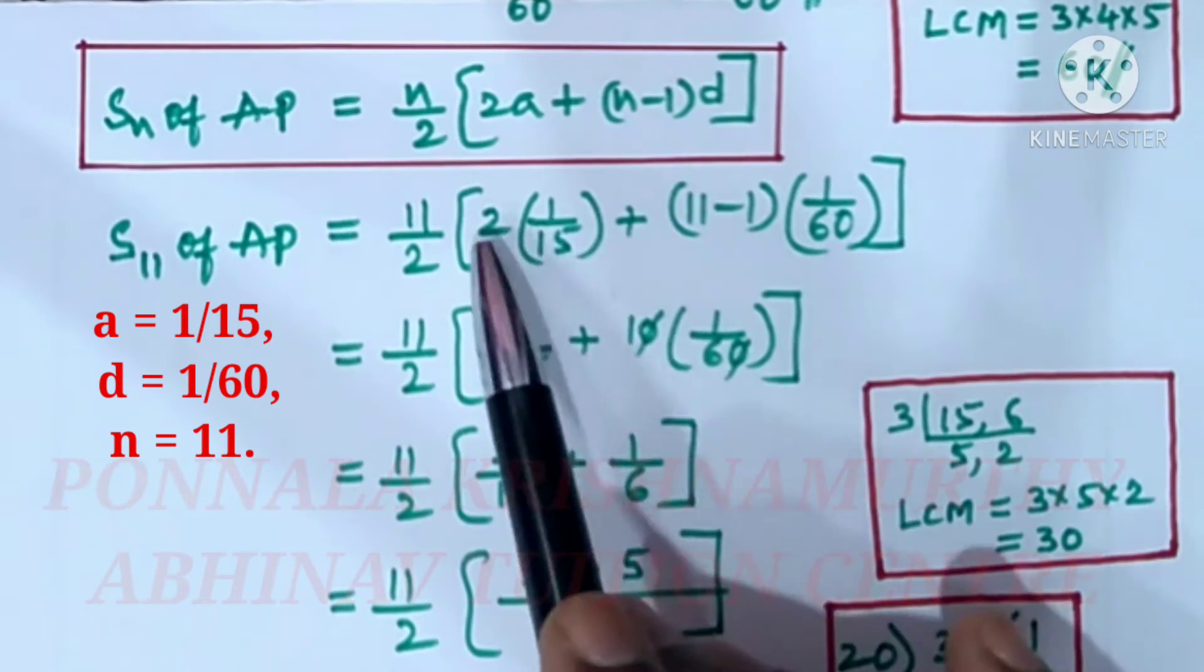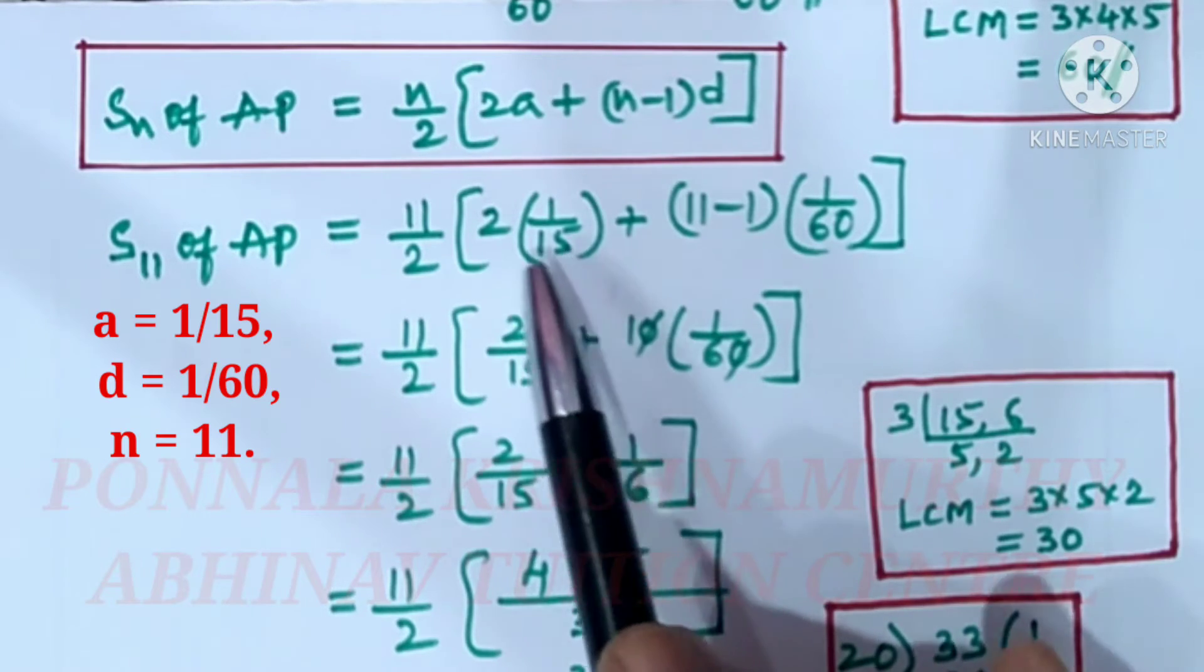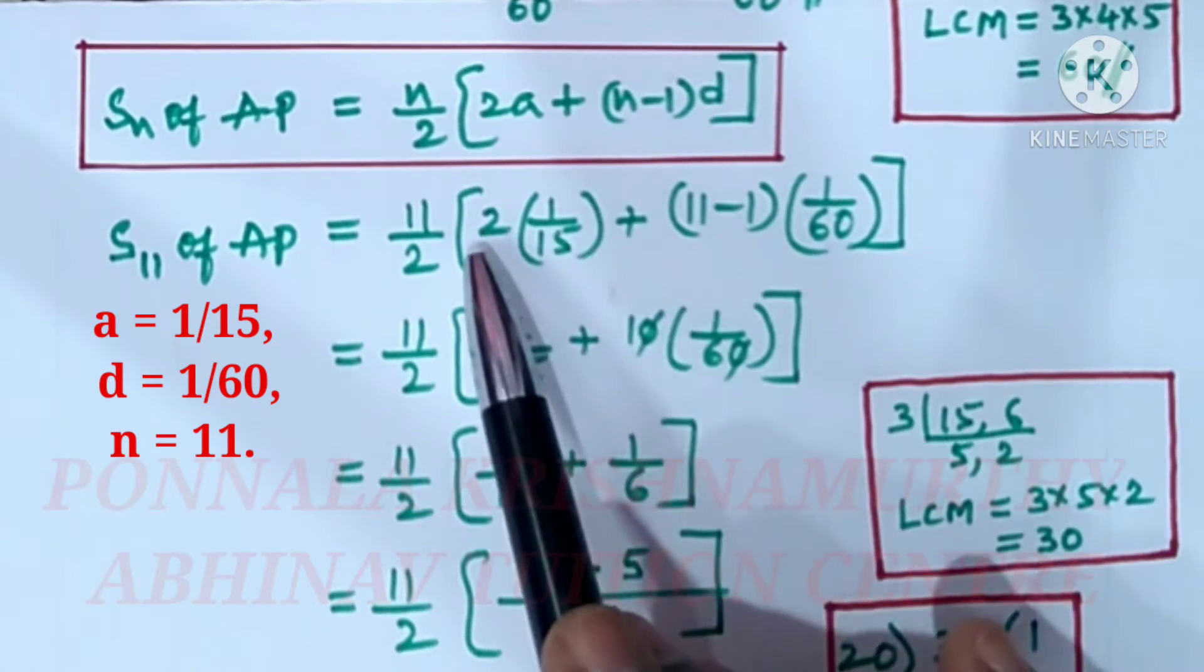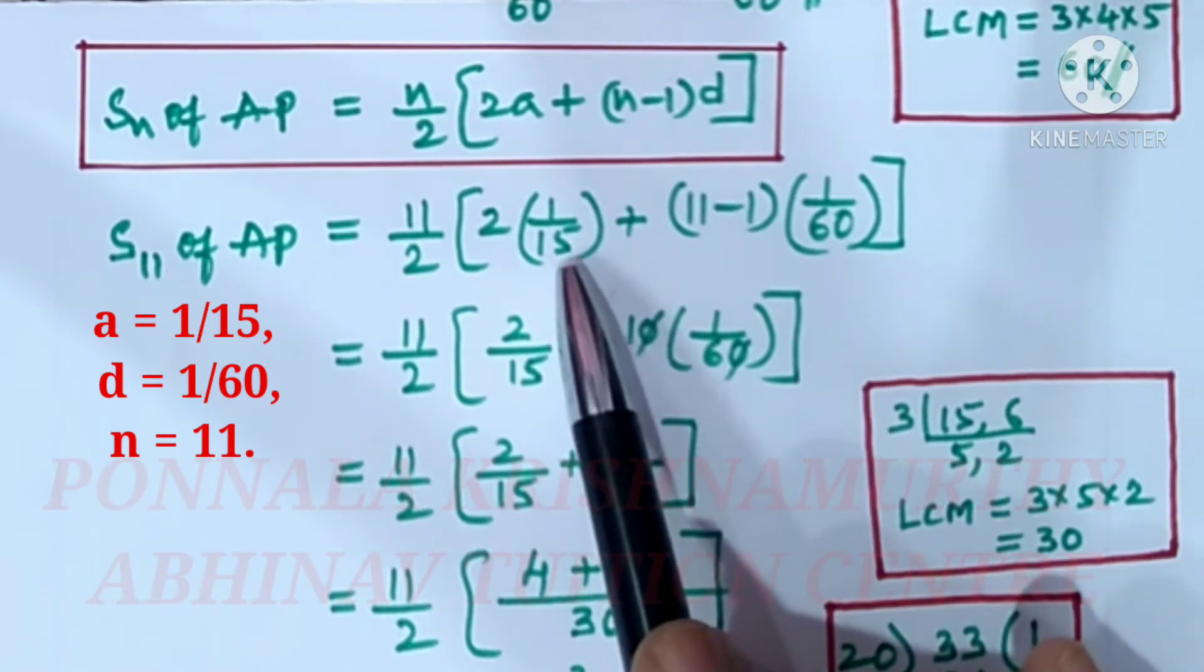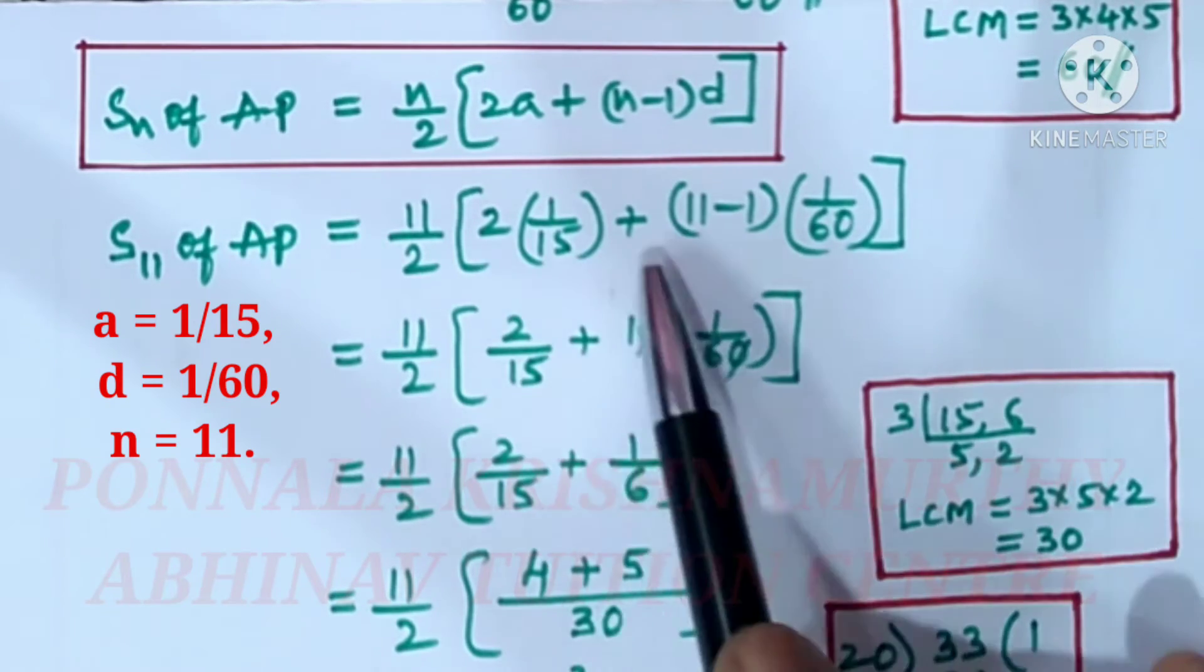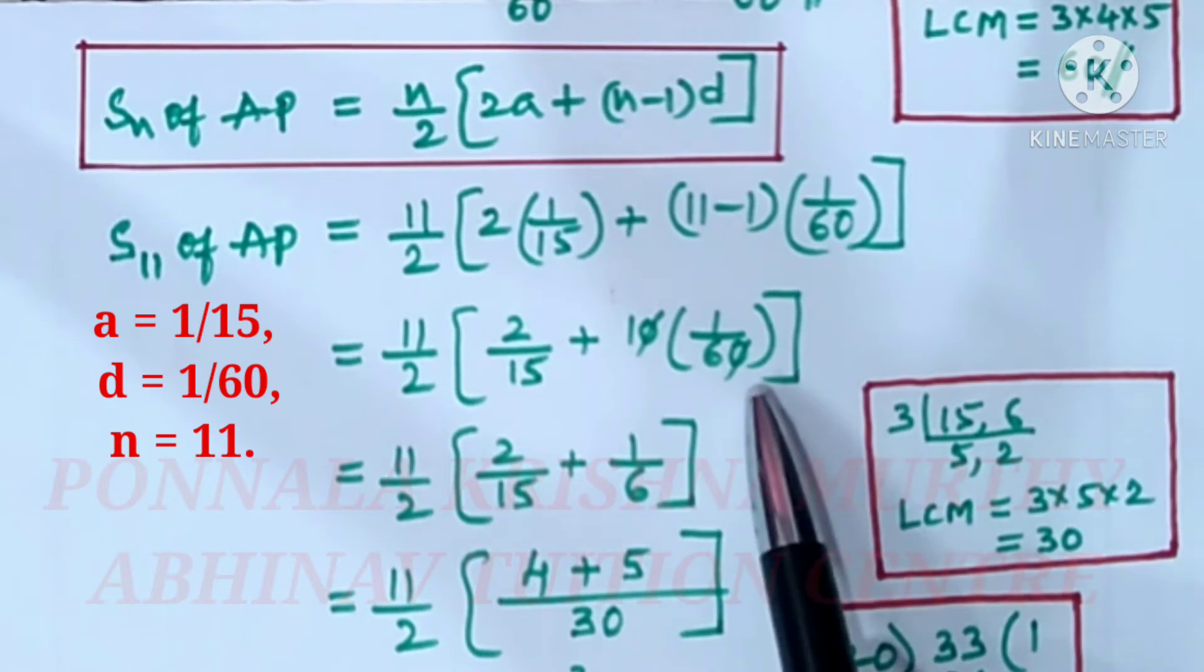We should not multiply 2 and 15. This numerator should be multiplied to the numerator and denominator 1 to denominator 15. So 2 times 1 is 2 and 1 times 15 is 15, plus 11 minus 1 is 10 into 1/60.